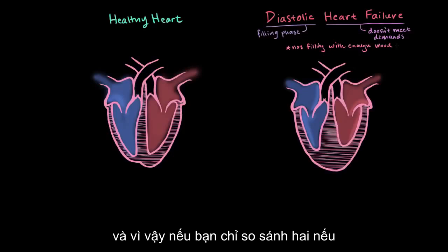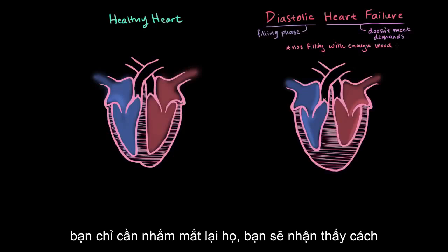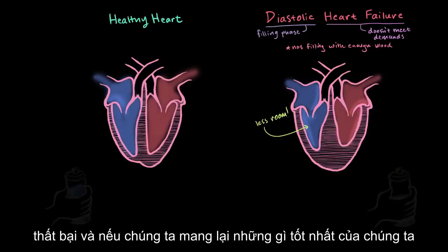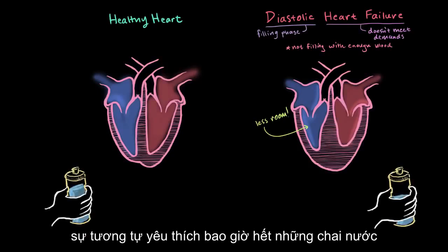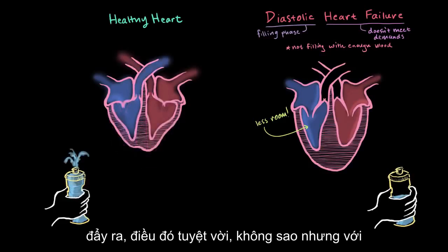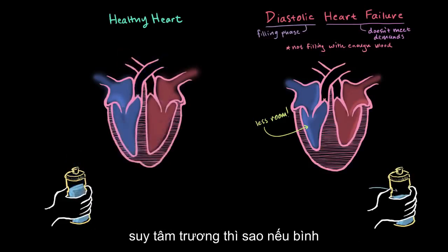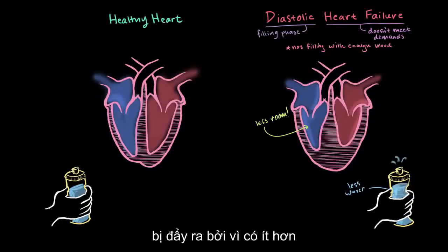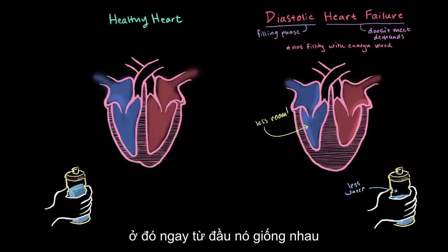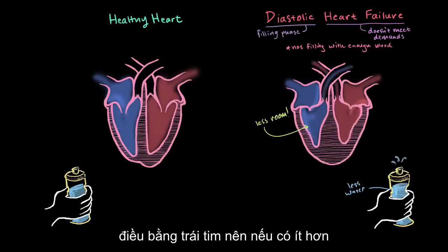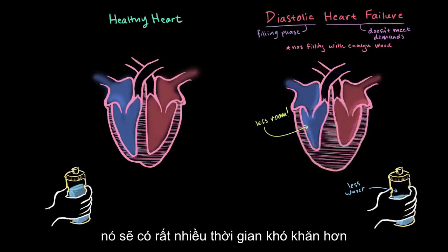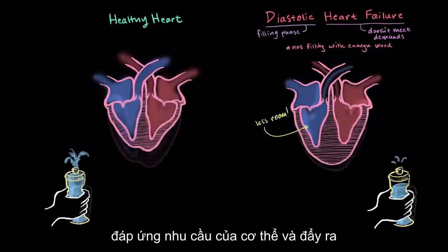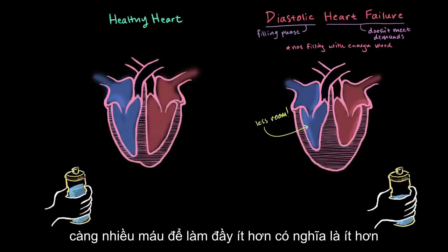If you compare the two, you'll notice how much less room there is with diastolic failure. Using the water bottle analogy: if you squeeze the healthy one, water ejects out. But with diastolic failure, what if the bottle's not filled with as much water and you squeeze it? Obviously less water is going to be ejected because there's less in there in the first place. It's the same thing with the heart — if there's less blood in the heart, it's going to have a harder time meeting the body's demands. So less filled means less ejected.